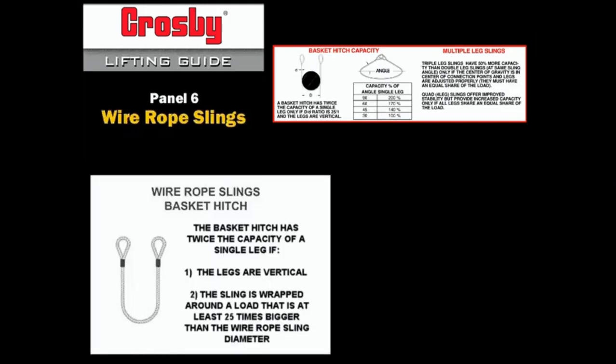The basket hitch of a wire rope sling has twice the capacity of a single leg sling if the legs are vertical and the sling is wrapped around a load that is at least 25 times bigger than the wire rope sling diameter. Thus,